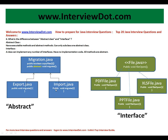The first principle in good code design: if you want to know whether the code is well designed, check for duplication of code. Here, duplication is avoided by creating an abstract class. The copy file method has been moved from export and import into migration.java, so both export and import can use the copy file method.